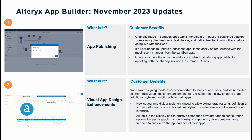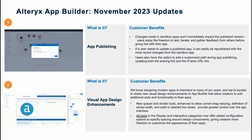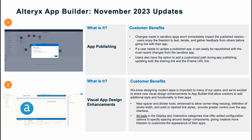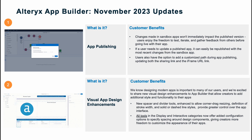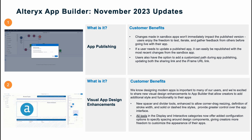Next, visual app design enhancements. We know designing modern apps is important to many of our users, and we're excited to share new visual design enhancements to App Builder that allow our creators to add additional style and functionality to their apps. First, there are new spacer and divider tools, enhanced to allow corner drag resizing, definition of stroke width, and solid or dashed line styles, providing greater control over the app interface. Secondly, all tools in the display and interactive categories now offer added configuration options to specify spacing around design components, giving you more freedom to customize the appearance of your app.